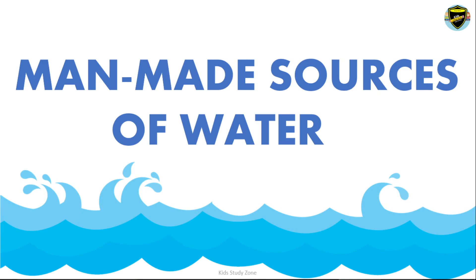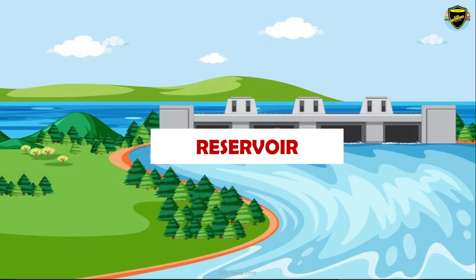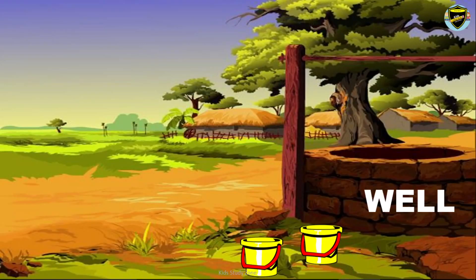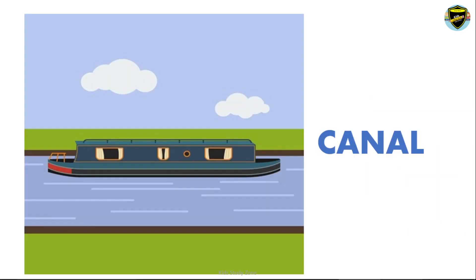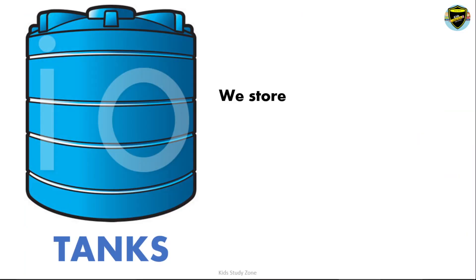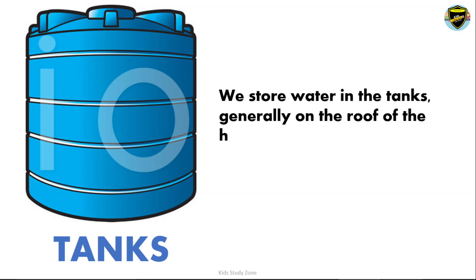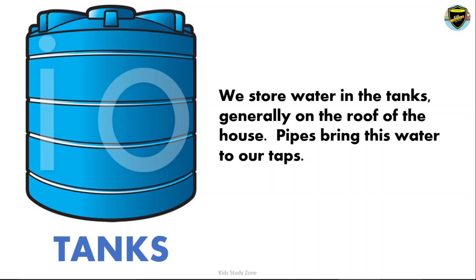Now we will see the man-made sources of water. Some examples are reservoir, well, tube well, hand pump, canal, and tanks. We store water in tanks, generally on the roof of the house. Pipes bring this water to our taps.